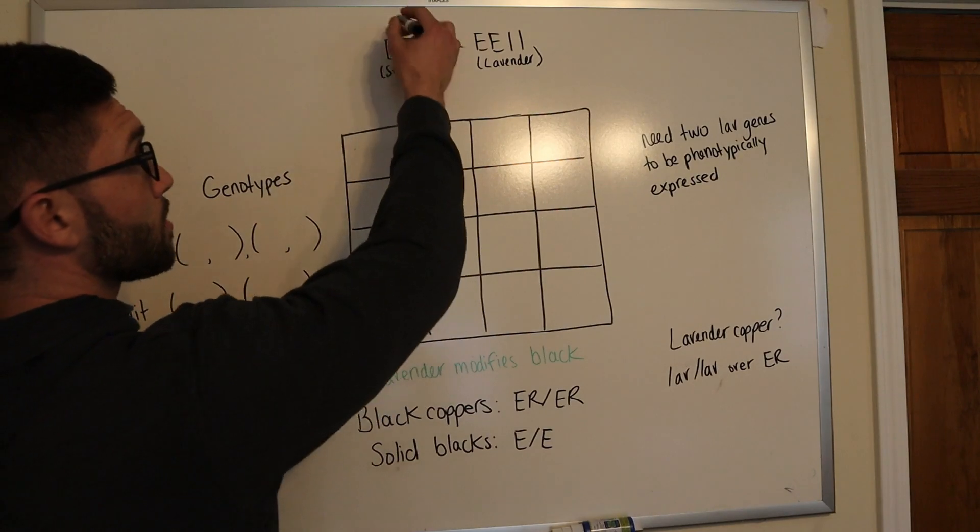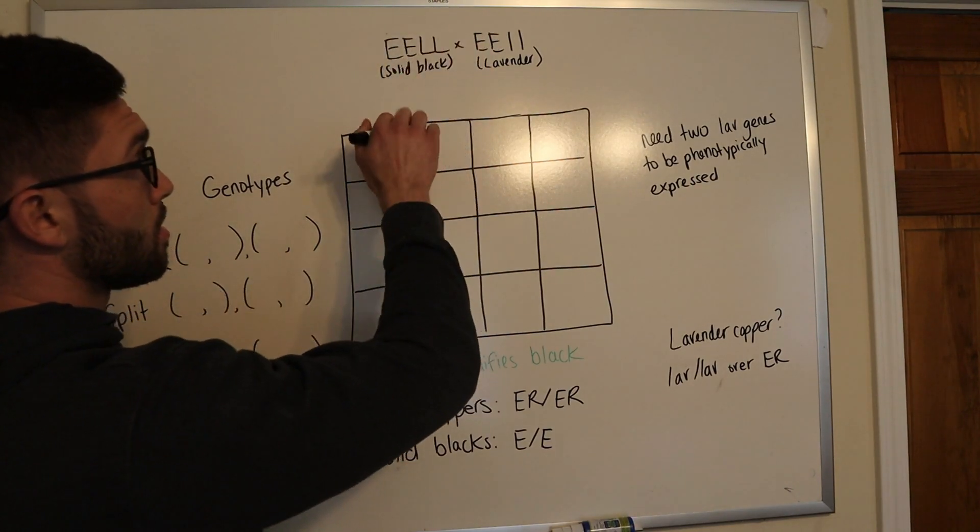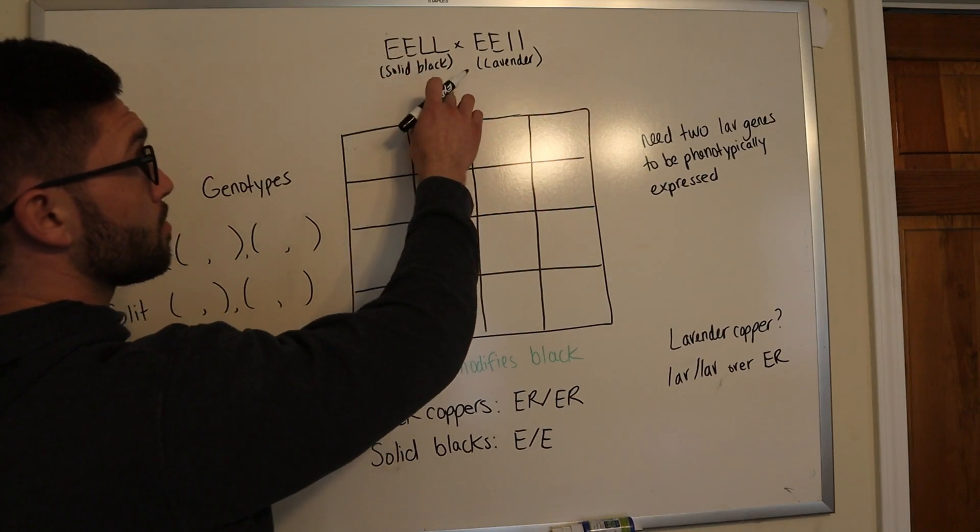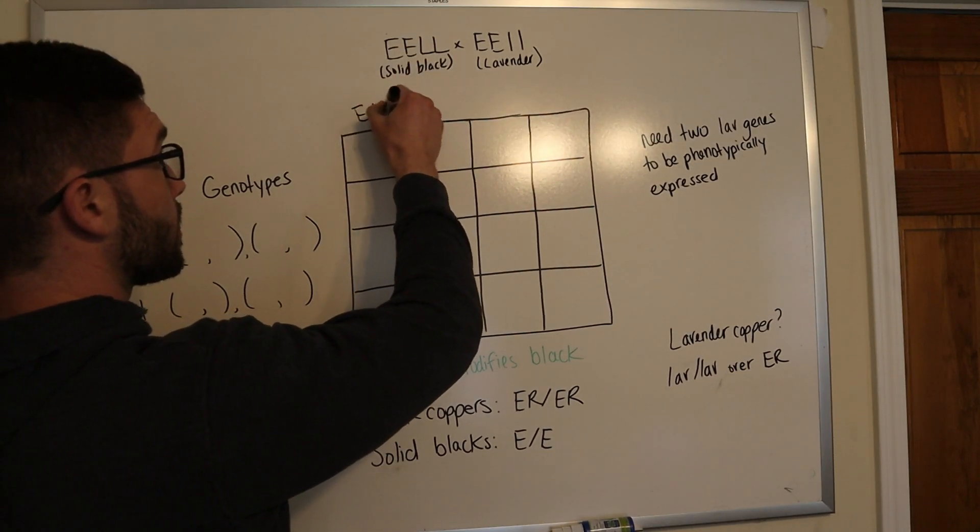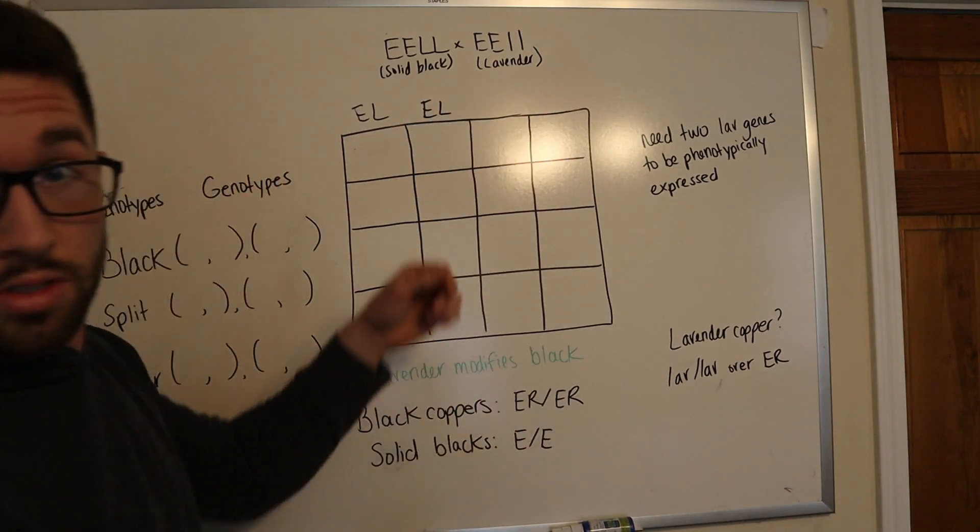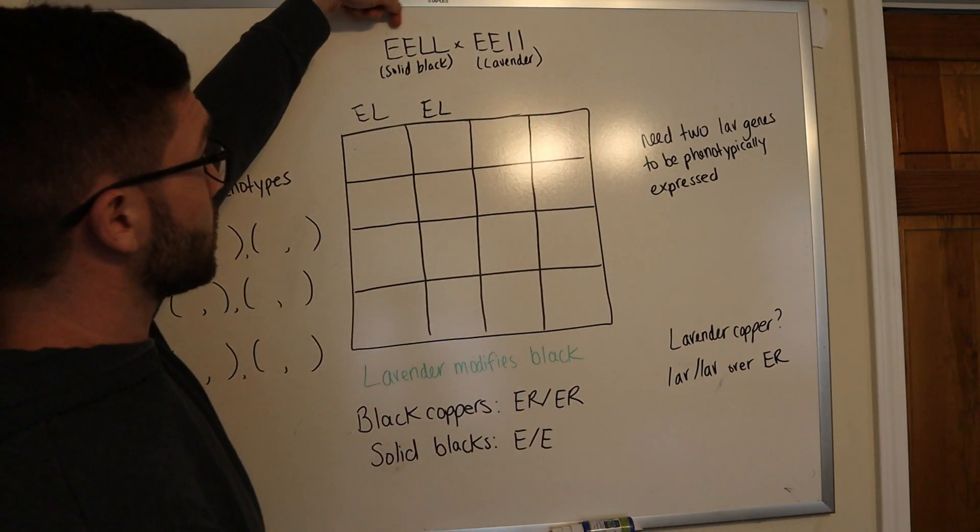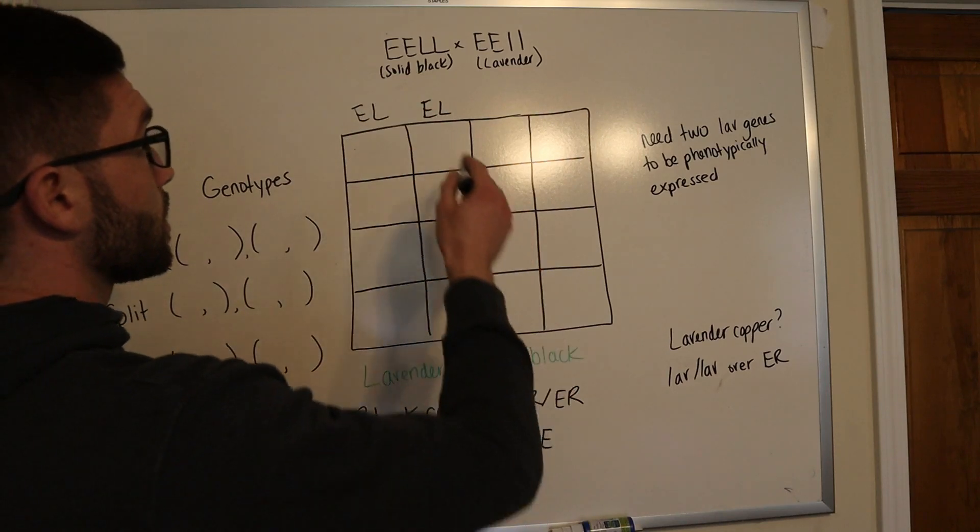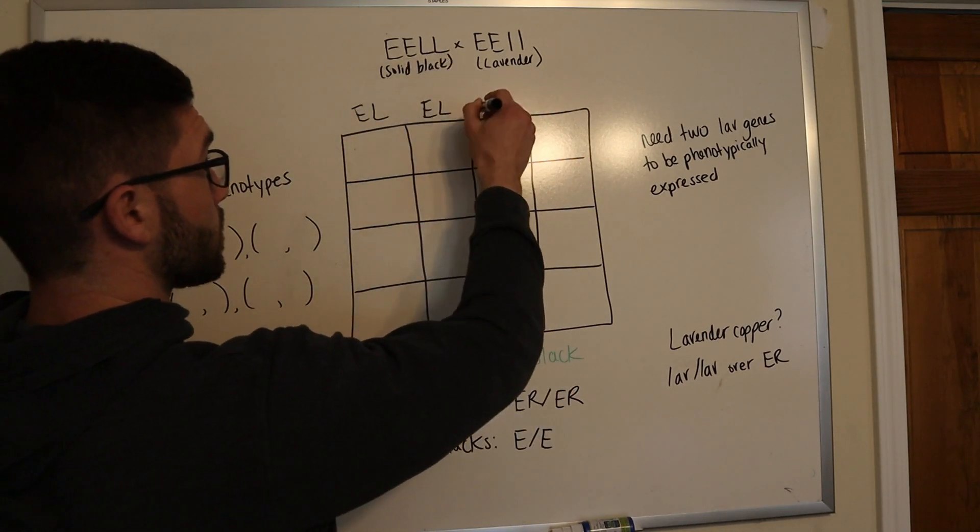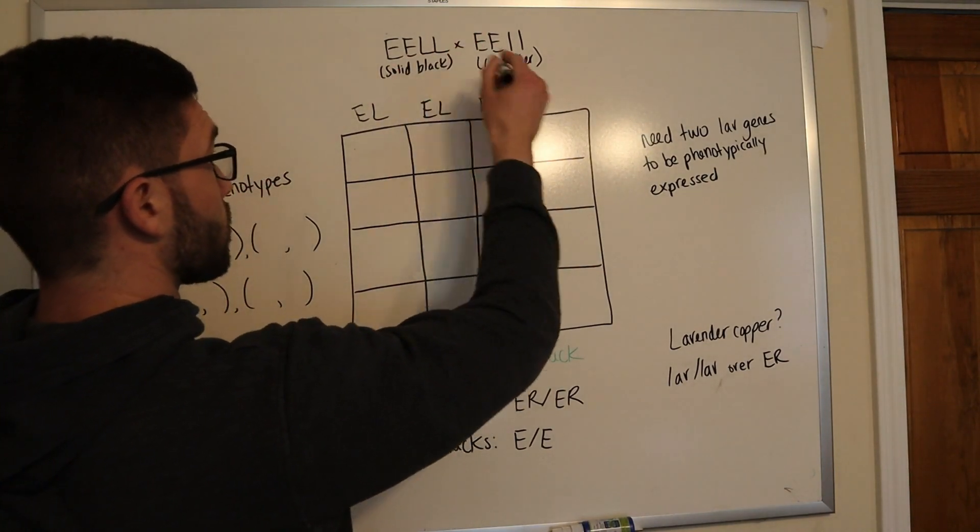So you want to start off with, we're going to label these one, two, three, and four. So you want to start with mixing one and three. So big E, big L, and then one and four. I don't know if you can see this, but one and four. And so now you're going to move over to the next allele and that's two and three. And then two and four.